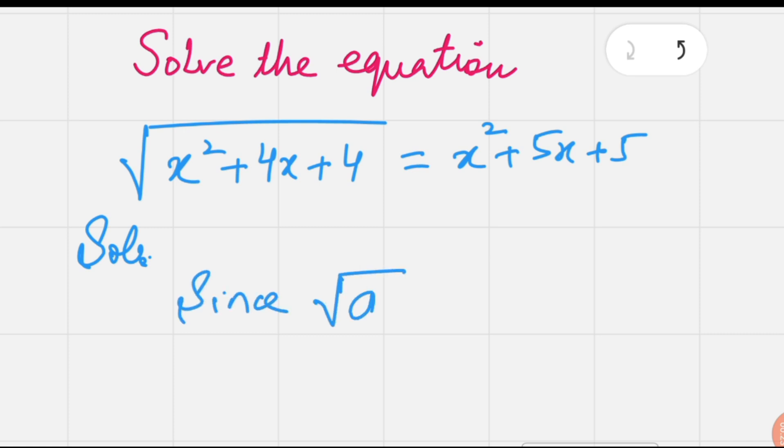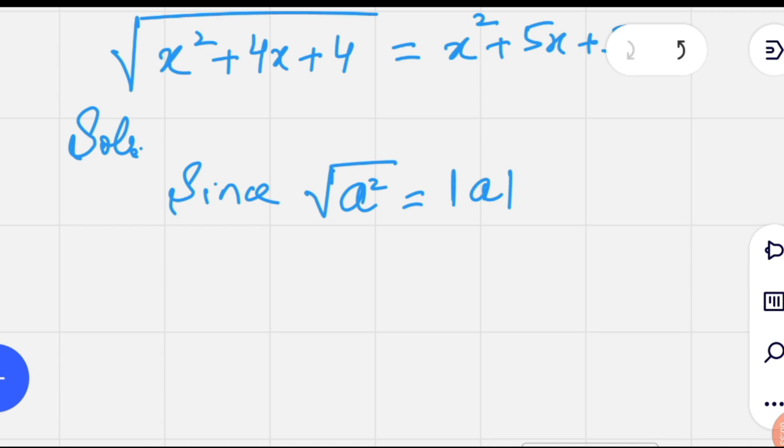Before going to solve this equation, let's recall a definition: the square root of a squared is equal to the absolute value of a.